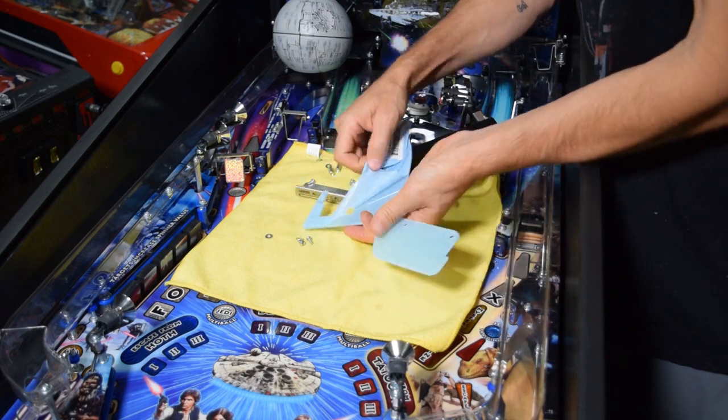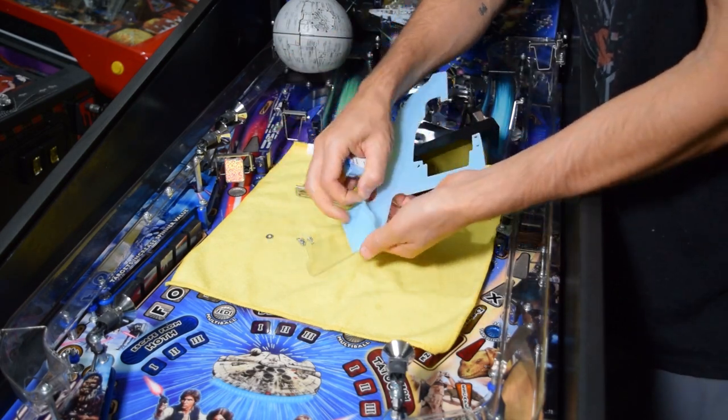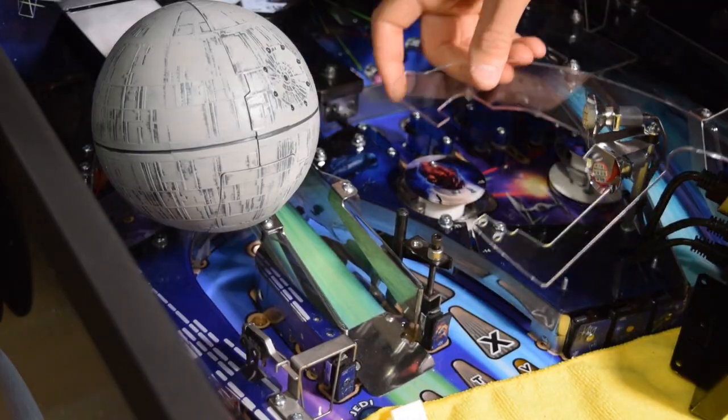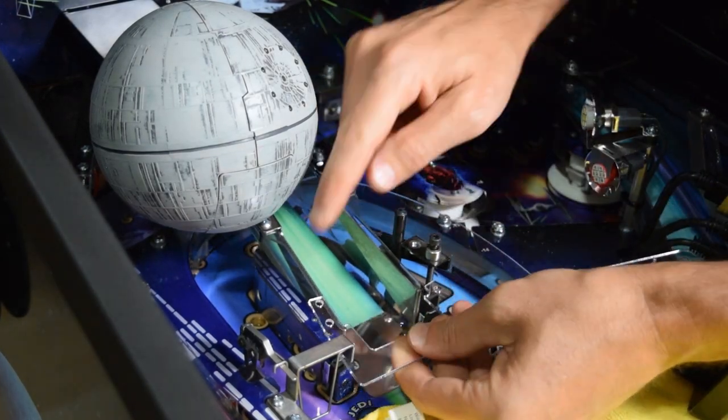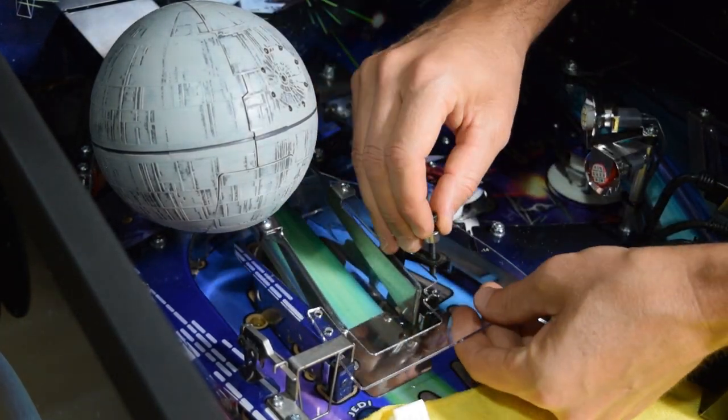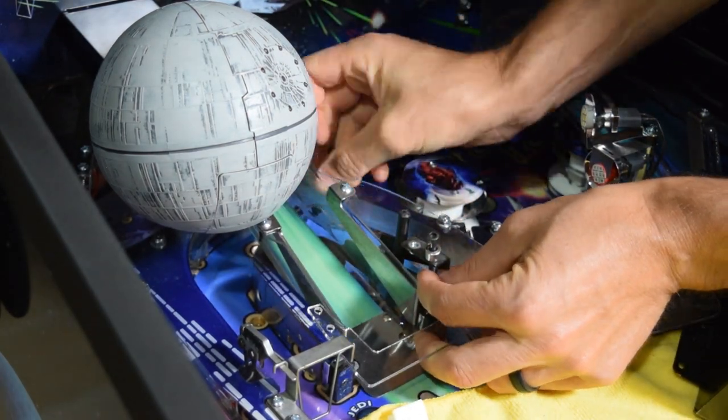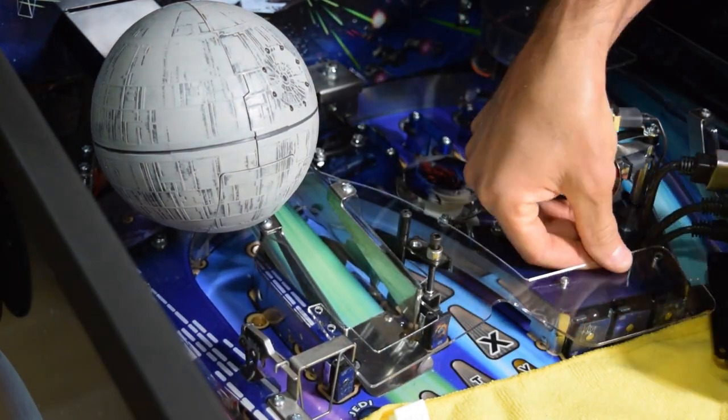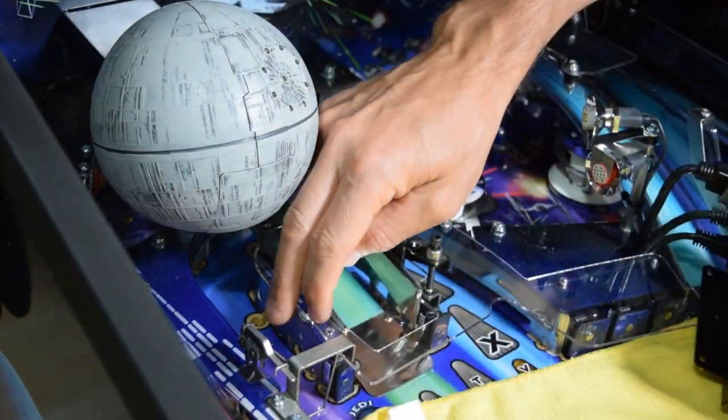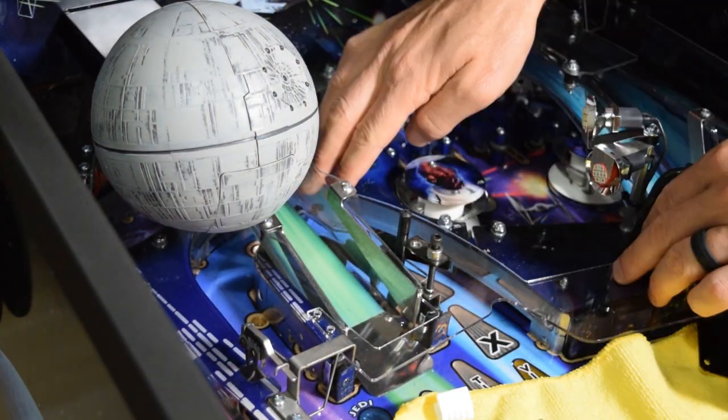Now remove the protective covering from both sides of the protector and install it. I would recommend sliding the tab under the ramp before lining up the posts and holes. You will need to raise the TIE Fighter Allen screw in order to slide the protector into place. Again, make sure the tab is properly positioned under the ramp before proceeding to the next step.